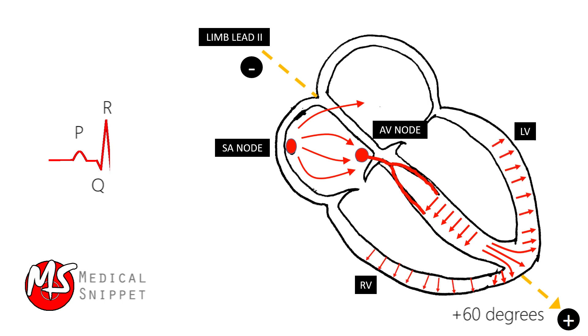As the left ventricular muscle mass is more than the right ventricle, the right ventricle contributes little to normal QRS complexes.